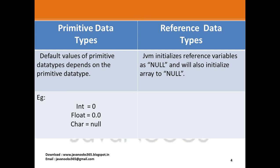The next difference is the default values of primitive data types depends on the primitive data type. So the default values of each primitive data type differs from one another. For example, the default value of int will be zero, float will be 0.0, char will be null, and boolean will be false.